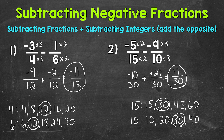One more thing to mention is about subtracting a negative. In number two, we started with negative 5 fifteenths and subtracted negative 9 tenths, yet ended up with 17 thirtieths — we increased in value even though it was a subtraction problem. That's because when you subtract a negative, you actually increase in value. You can think of it as subtracting or taking away debt, which is a positive thing. So when you subtract a negative, you are going to increase in value.